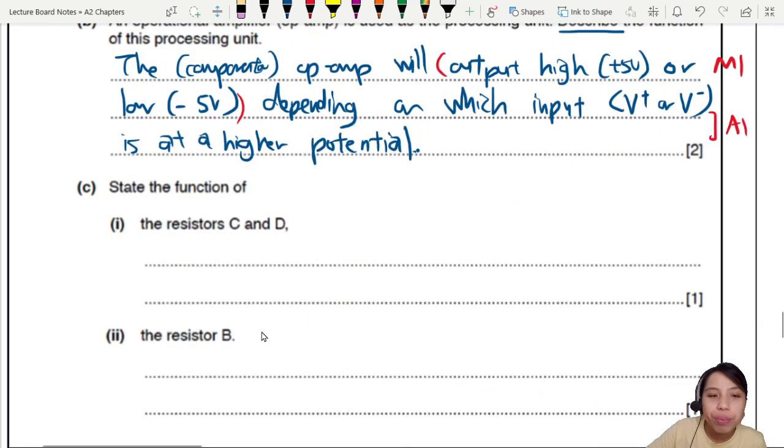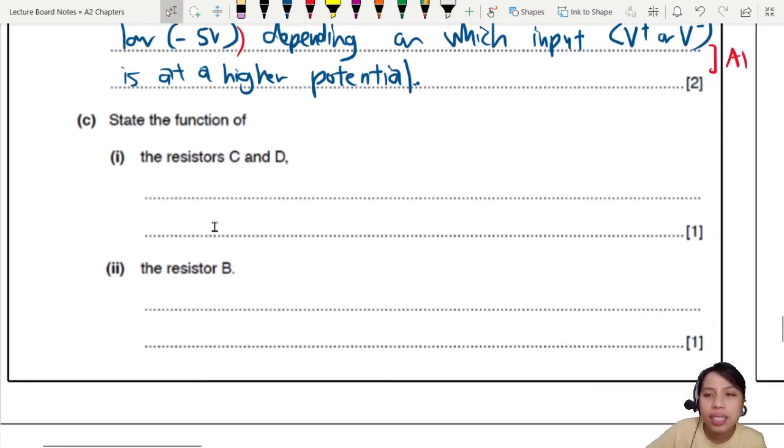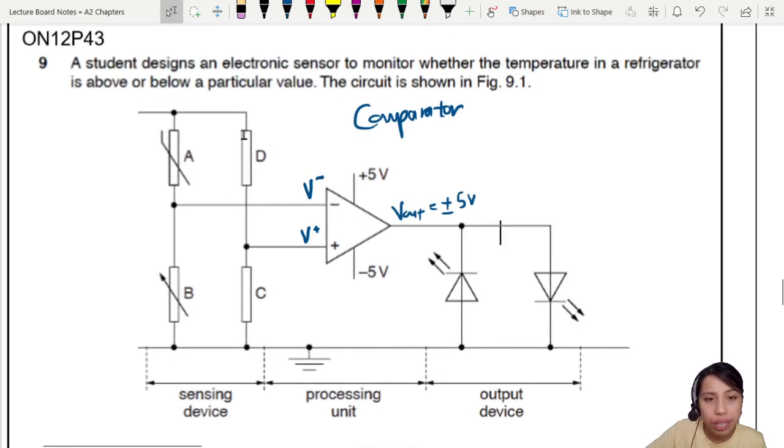Now what are we supposed to do next? State the function of resistor C and D. C and D is right here. Why do we have two resistors here and a potential divider? One question for you is will the potential of V plus be changing? Actually no. Because these resistors are constant. Their R values are fixed. R D is fixed. R C fixed. Not going to change. So this one is going to be a steady constant potential. V plus is just going to be fixed. It's like your reference point. So the potential divider CD is just to fix V plus. That's all the purpose is.